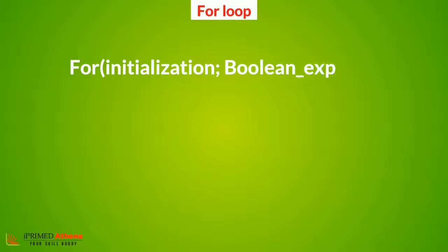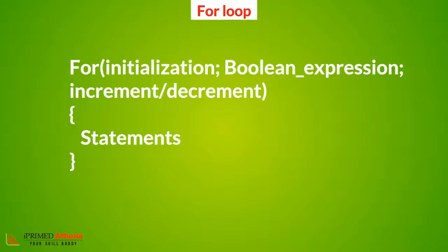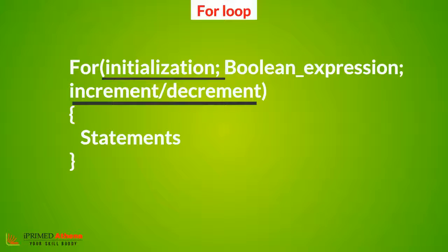For loop is the third type of loop that specifies the exact number of times the statements must execute. For which, variable initialization and increment or decrement variable is specified, along with the boolean expression.